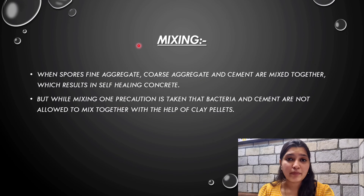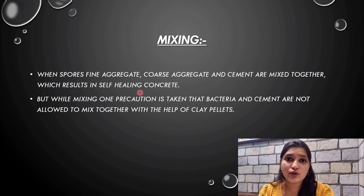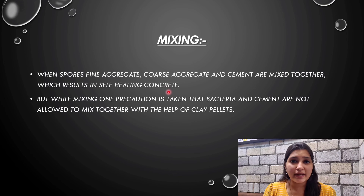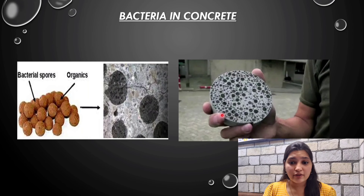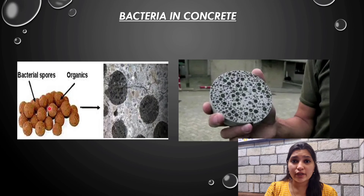Now our next point is mixing. It's not simply a case of mixing and then adding bacteria. The bacteria spores, along with fine aggregate, coarse aggregate, and cement, are all mixed together to result in self-healing concrete. But while mixing, one precaution should be taken: bacteria and cement should not be allowed to mix together with the clay pallets. As you can see in the pictures, bacteria spores — which is the bacteria we are going to use in self-healing concrete — when mixed into the concrete, look like black spots in the concrete.